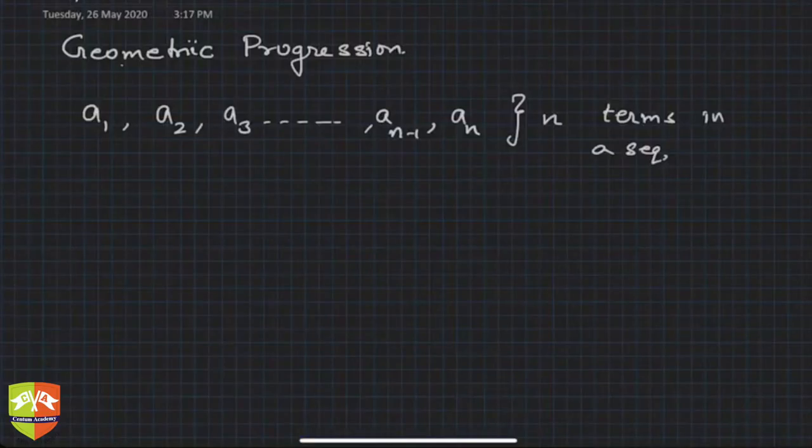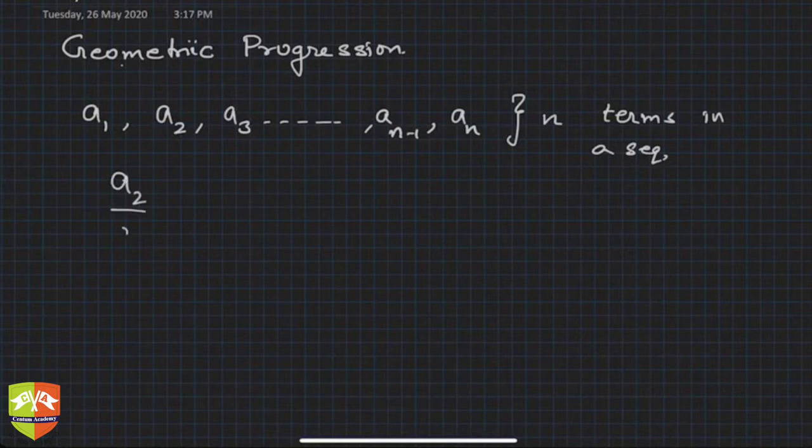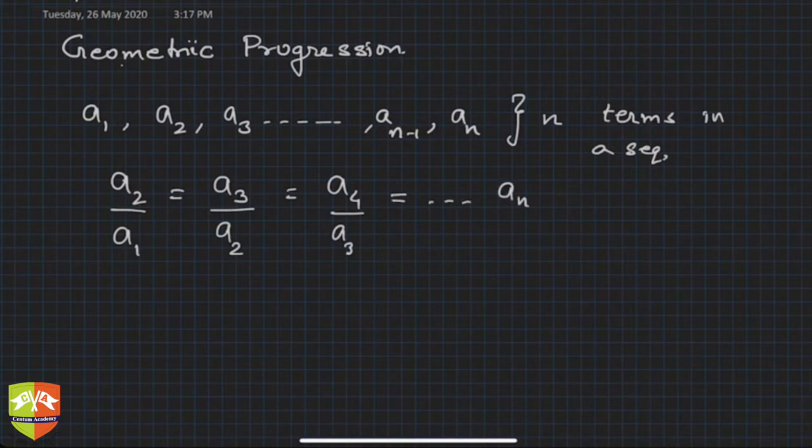This was that if a2 upon a1 is equal to a3 upon a2 is equal to a4 upon a3, what all are these? These are nothing but ratio of consecutive terms. So an upon an-1, if it is a constant value r, then we say that this particular sequence is geometric progression.